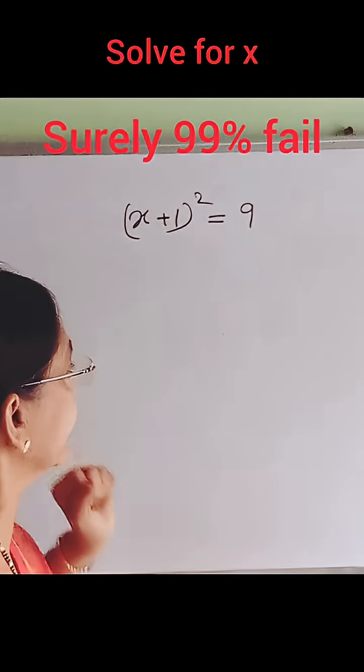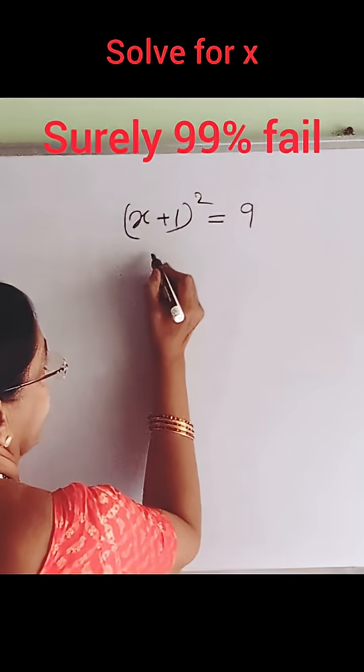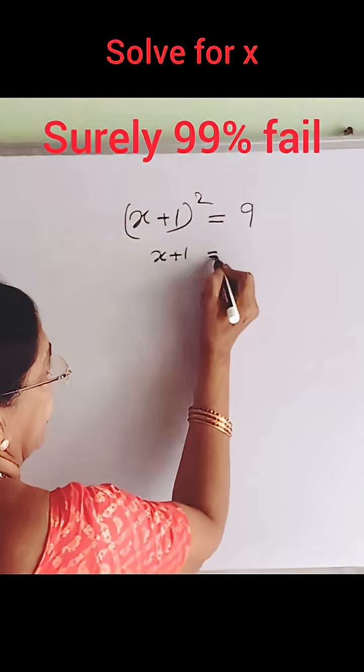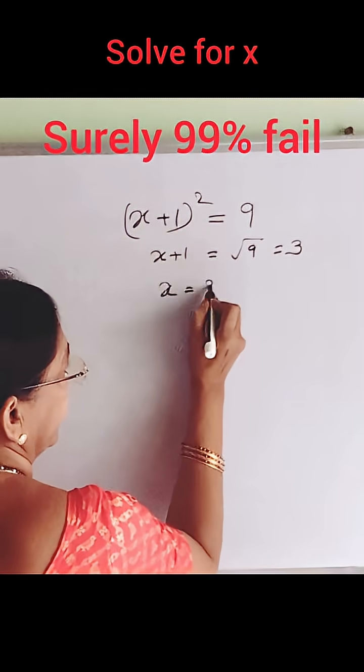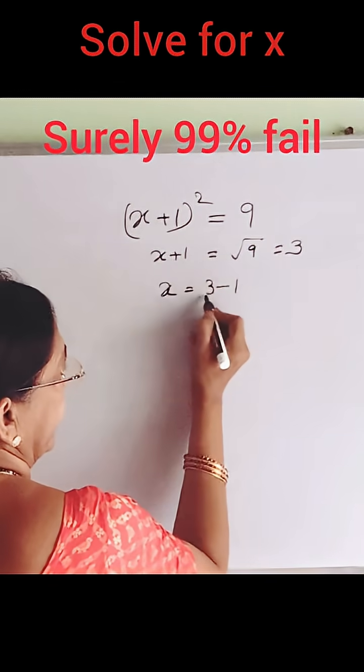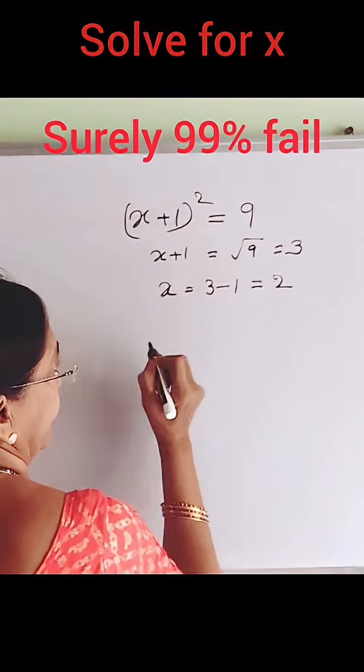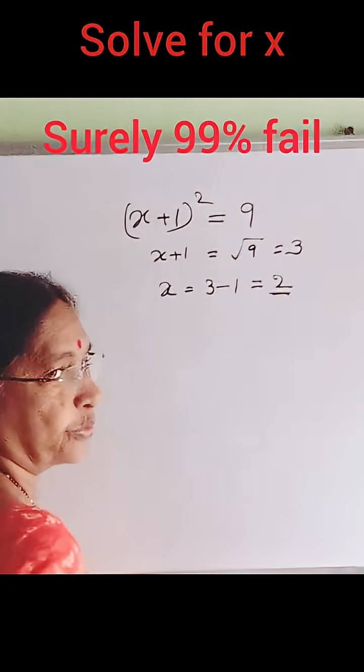x plus 1 whole square is equal to 9. Taking square roots on both sides, x plus 1 is equal to square root of 9, that is equal to 3. Or x is equal to 3, taking 1 to the other side, x 3 minus 1, 2. So x is equal to 2.